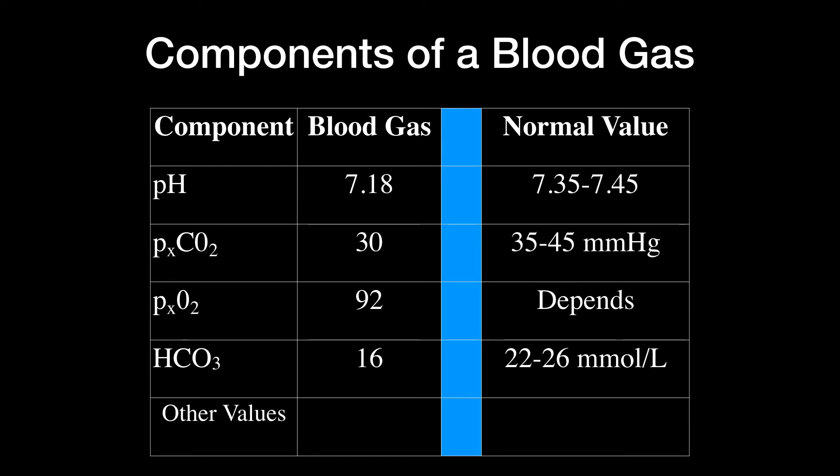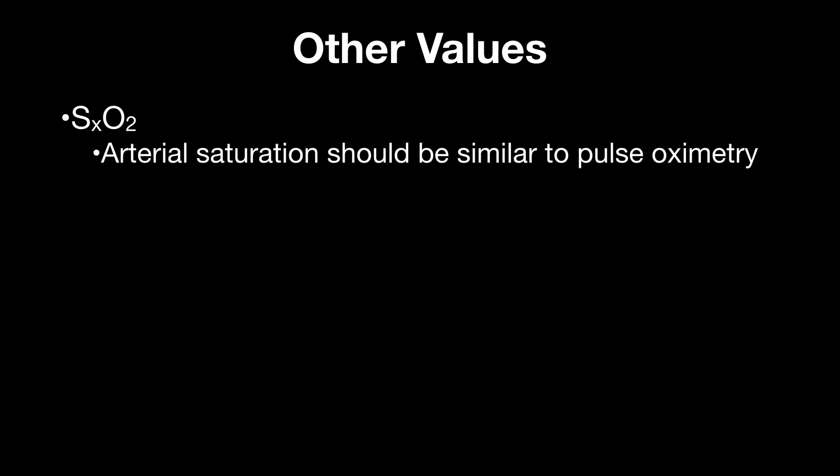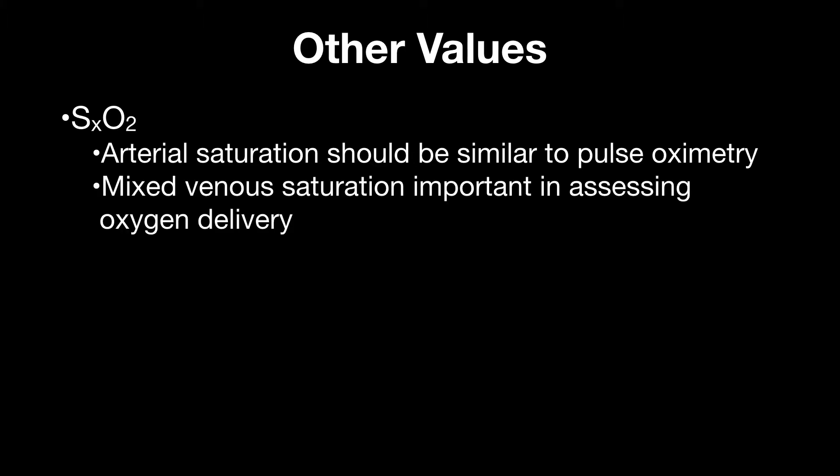There are other values within blood gases, and let's just go through a few of them. First, sometimes you'll see the saturation of oxygen. With an arterial blood gas, the saturation of oxygen on the blood gas should be almost identical to that saturation of the pulse oximetry, because that's what it's measuring. The pulse oximetry is measuring the saturation of the arterial gas. The saturation of the blood gas is actually really important when we talk about the mixed venous saturation from a mixed venous blood gas, which is collected from a central line. It's important in assessing oxygen delivery, particularly in patients with circulatory failure. We'll save this for another day, but an important thing to remember.